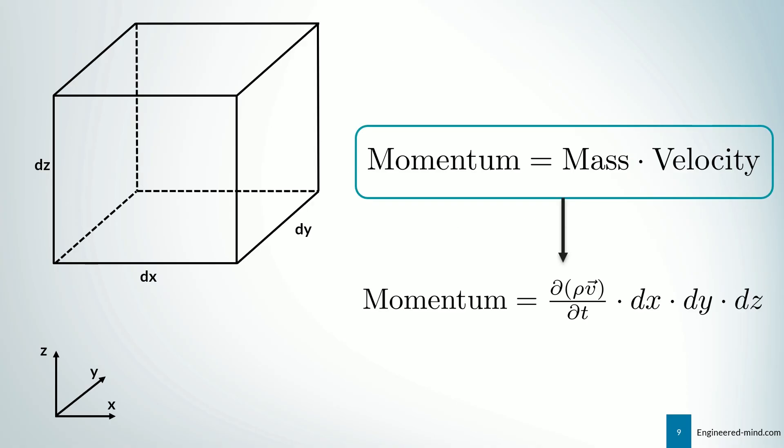So we will have a look at the small infinitesimal control volume as depicted on the left again, and momentum as defined as mass times velocity. So we take the definition of mass, which is nothing else than d rho by dt times dx dy dz, and add the velocity to it, namely v as a vector.